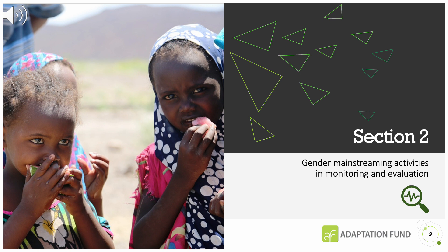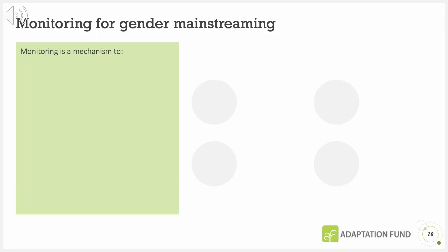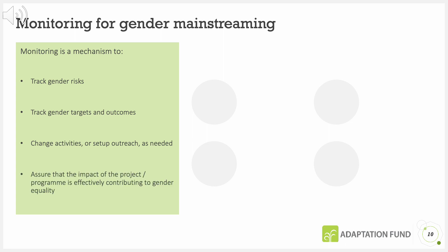Section 2: Gender mainstreaming activities for monitoring and evaluation. Monitoring is a mechanism to track gender risks, track gender targets and outcomes, change activities or set up outreach as needed, and assure that the impact of the project or programme is effectively contributing to gender equality.